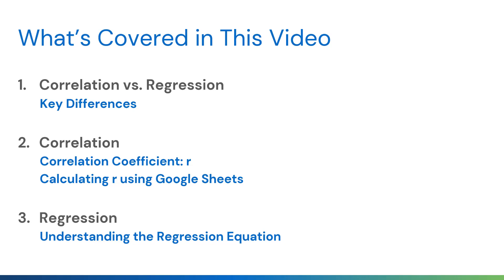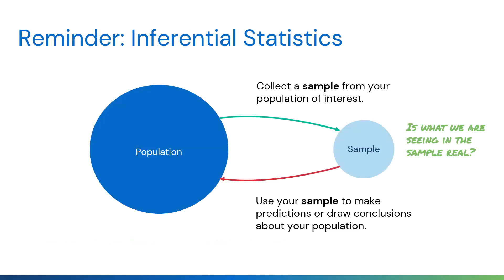As a reminder, inferential statistics is about making inferences from a sample. We collect a sample from a population of interest as part of our data collection in a study, and then we take that sample and ask: is what we are seeing here in the sample real? Does it represent what's going on in the population? We can use our sample to make predictions or draw conclusions about our population.